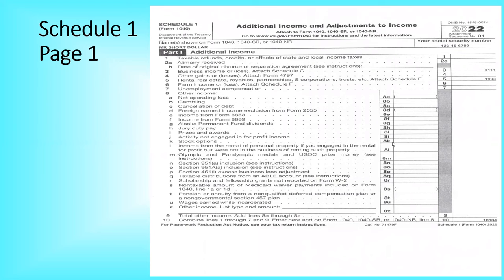So I know a lot of times when you do it yourself or go to a preparer, you get a stack of forms and never really go through them — you just figure this is what came up from the computer and everything's right. But this will give you a good idea of how this information is transferred over. You see that $1,993 — that's right here on line 5 on your additional income: real estate, royalties, partnership — you attach Schedule E. That's it right there — $1,993.